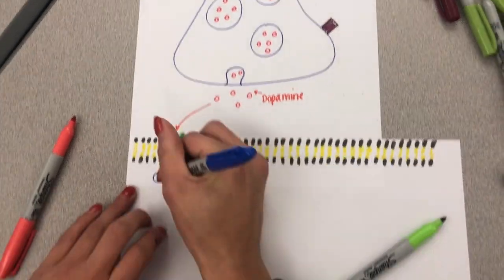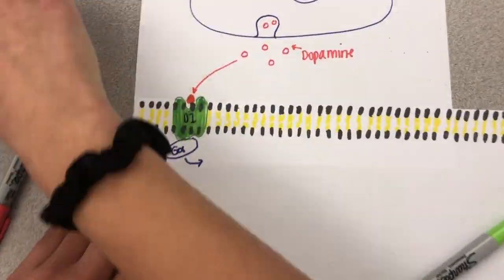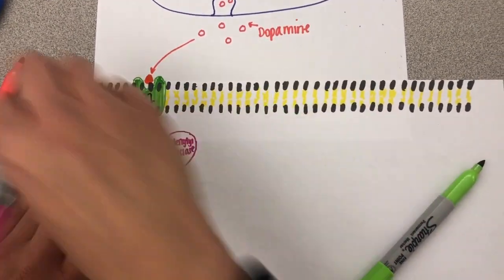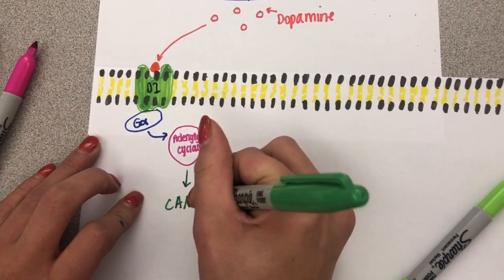The alpha G protein subunit detaches and then reattaches to adenylyl cyclase, which activates it. cAMP is produced by this adenylyl cyclase.